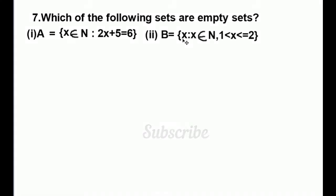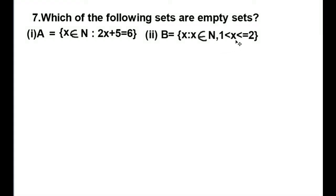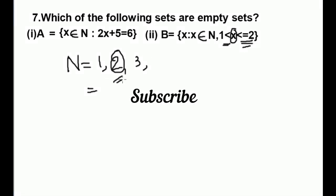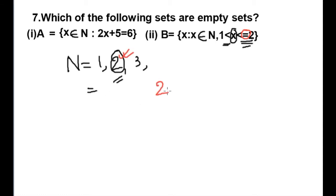B is the set of x such that x is an element of natural numbers, x is greater than 1 and less than or equal to 2. Natural numbers start from 1: 1, 2, 3, and so on. Our condition is x > 1, so greater than 1 gives us 2, and less than or equal to 2 also gives 2 because of the equal sign. So 2 is the value of x.